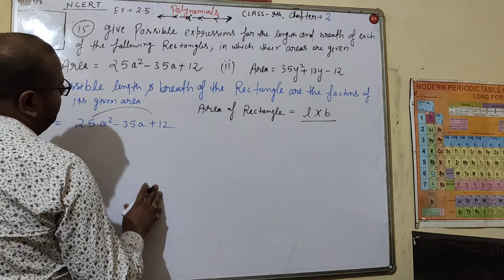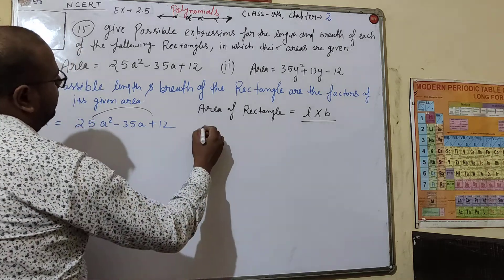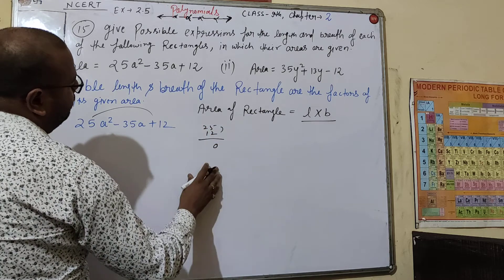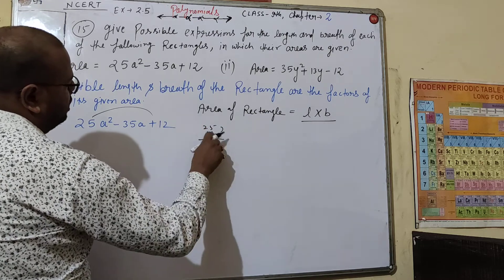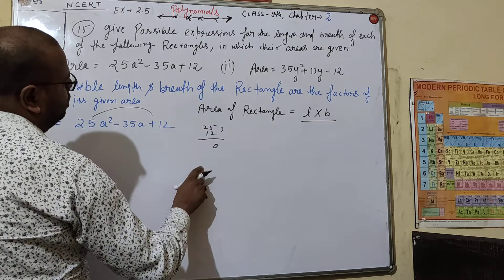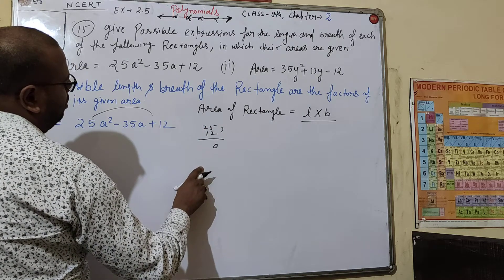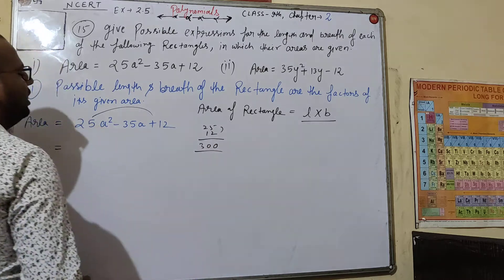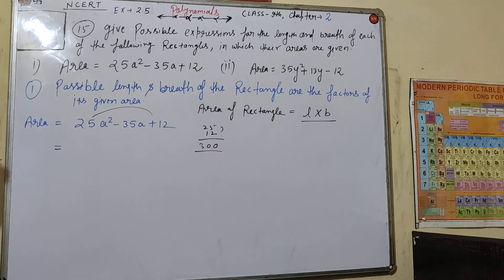When we multiply the first number by the last number, we get 25 into 12, which gives us 300. So if we want to break the middle term and split it out, the product we need is 300.